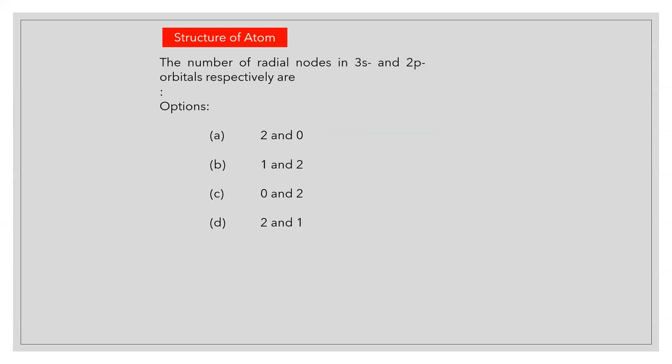The number of radial nodes in 3s and 2p orbitals respectively are? Answer A: 2 and 0.